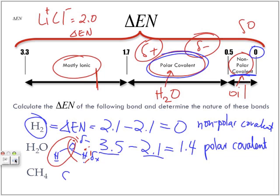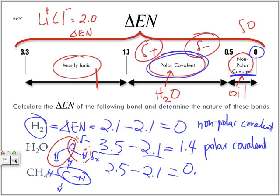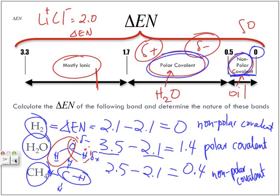For methane, CH₄, we compare the bond between carbon and hydrogen. Carbon has an electronegativity of 2.5; subtracting hydrogen's 2.1 gives us a value of 0.4, which lies within the non-polar covalent range. This means CH₄ is non-polar covalent — none of the ends are slightly more positive or slightly more negative — which is one of the reasons why methane would not mix with something like water. A non-polar covalent molecule will not mix with anything that is polar covalent.